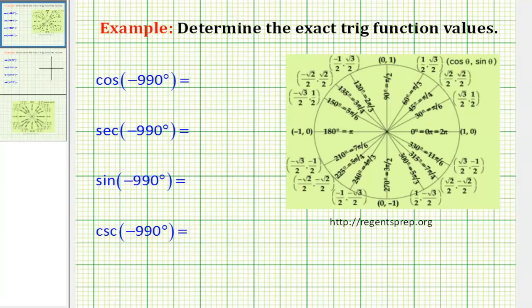So let's start by sketching this angle in standard position. So here's the initial side of our angle. And because it's a negative angle, we're going to rotate clockwise 990 degrees. So if we rotate two times clockwise, that would be negative 720 degrees.